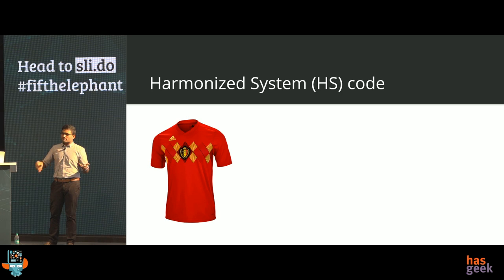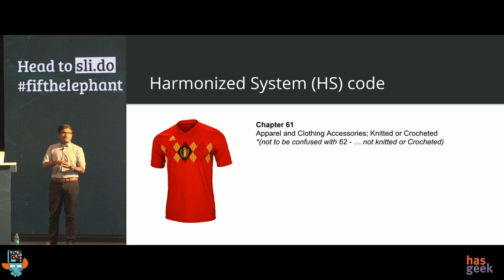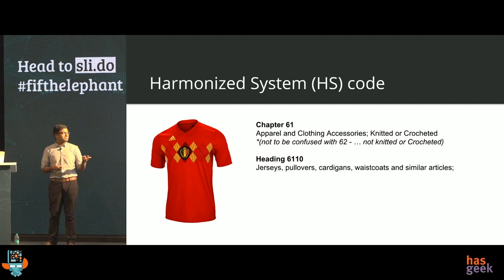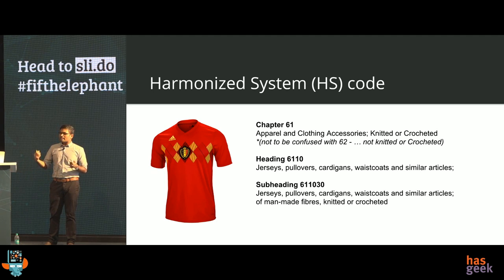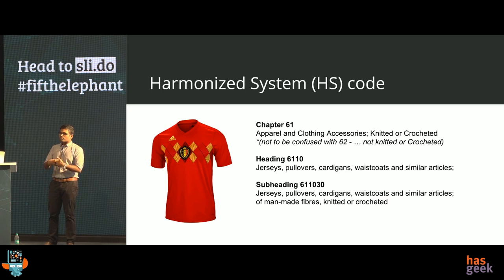For this specific use case, it falls into what we call Chapter 61, which is for apparel knitted or crocheted. You shouldn't make a mistake right off the bat, because Chapter 62 is actually very similar — everything is the same except a few riders. Then you go further: you start saying it's for jerseys, pullovers, cardigans, and then even further — it's made of man-made fibers. The idea of this whole task is to start with a specific product and come up with a classification label, which impacts a lot of things downstream. That is what we want to focus on — not just getting labels correct, but also analyzing the impact.